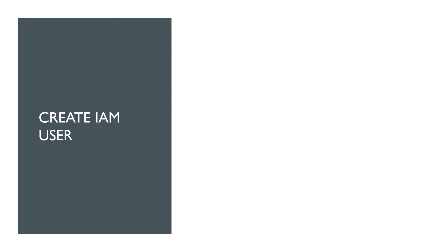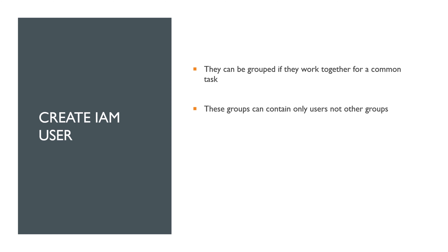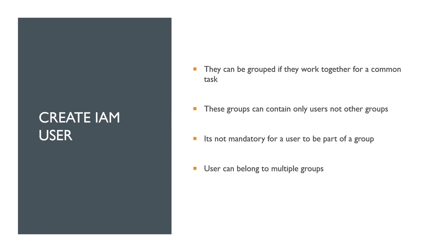IAM users can be grouped together if they work on a common task. IAM groups can contain only users, not other groups. Based on the job role we assign a user to a group. Also, a user need not be part of any group, and one user can belong to multiple groups.